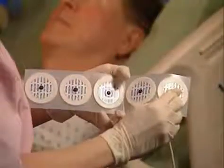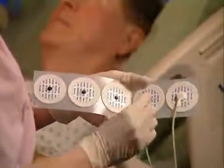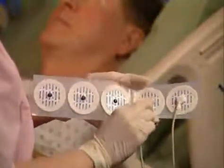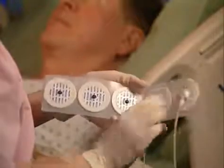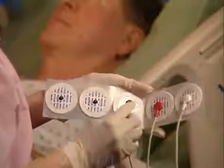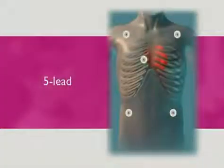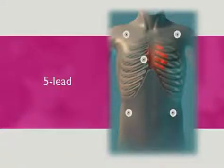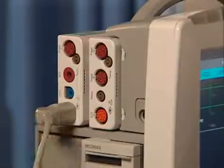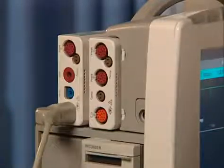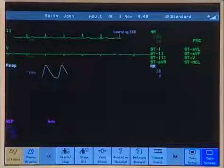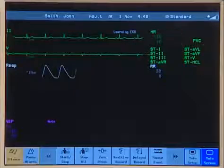After completing proper skin prep, attach the clips or snaps to the electrodes before placing them. Place the electrodes on the patient according to the lead placement you have chosen. Connect the patient cable to the ECG connector on the measurement server. The ECG waveform and numeric appear on the monitor display.